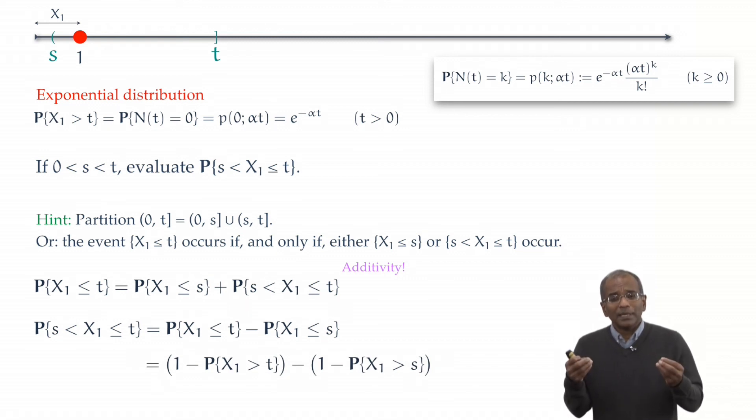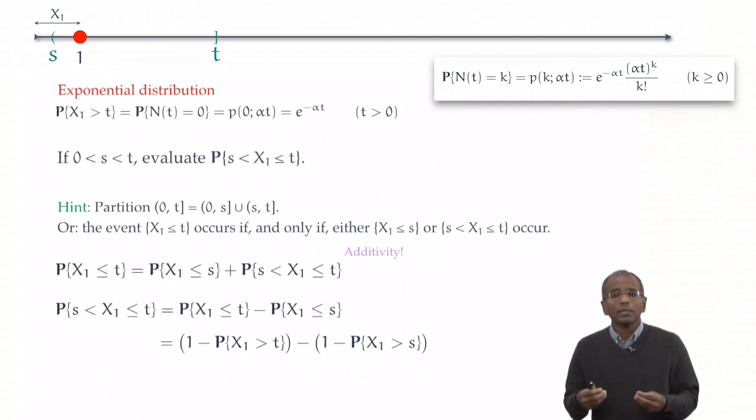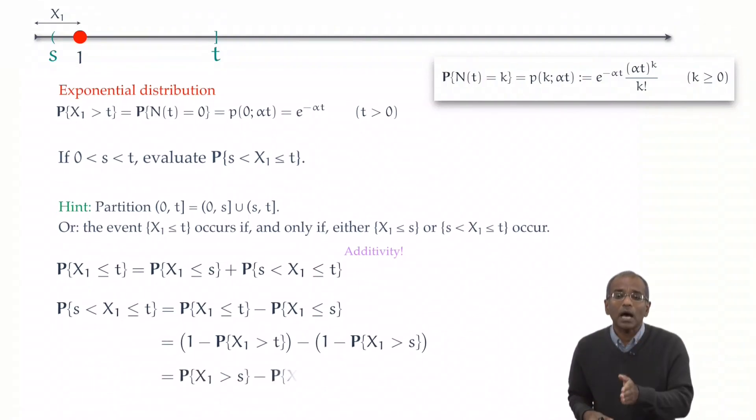Observe that the probability that the first arrival is before t added to the probability the first arrival is after t must give us one. This is additivity. And similarly for s. All right, the terms one on the right-hand side cancel out. Let's rewrite the terms. And we obtain that the desired probability is given by the probability that the first arrival is after s, from which you take away the probability that the first arrival is after t.